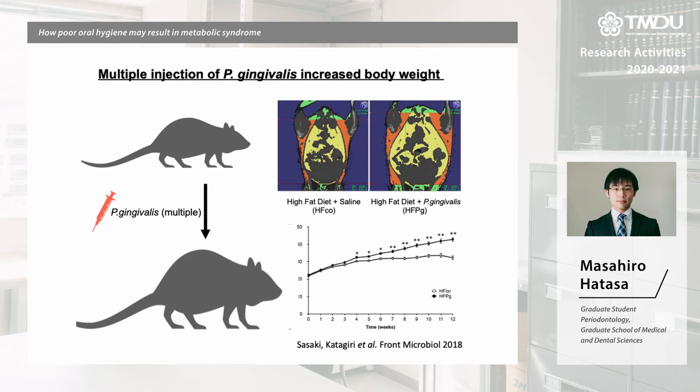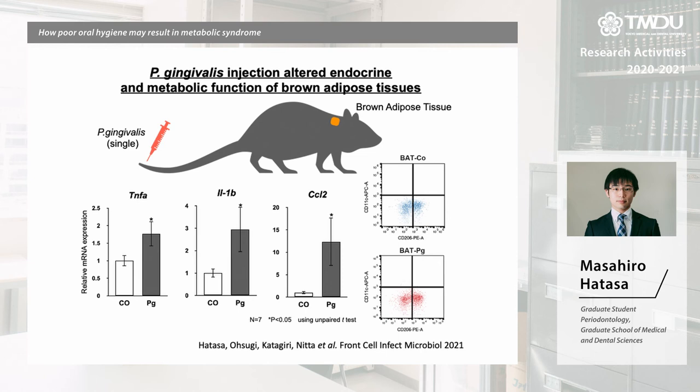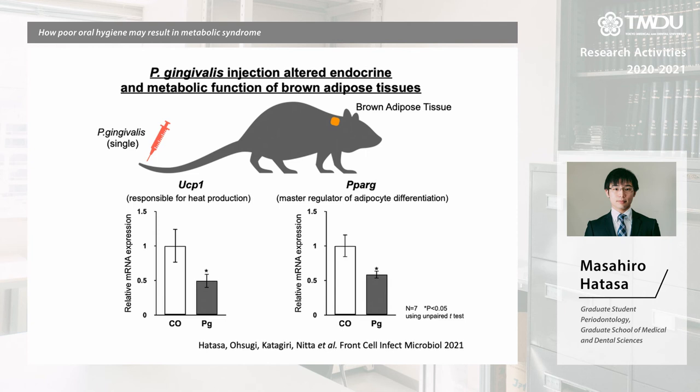We reported that multiple injections of P. gingivalis increase body weight in mice fed a high-fat diet. And even a single injection of P. gingivalis caused upregulation of inflammation-related genes without infiltration of M1 macrophages in brown adipose tissue. Surprisingly, UCP1, the gene responsible for heat production, was downregulated.